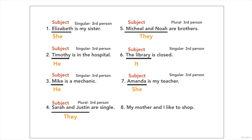Number eight: My mother and I like to shop. My mother and I are the subjects. It is plural, two people, first person — because there is an I — we.